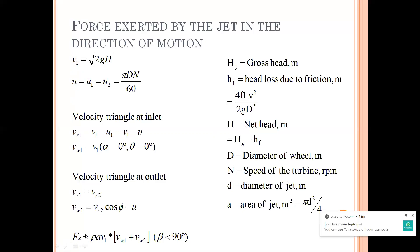So my Fx along the direction of motion is rho * A * v1 * (vw1 + vw2), and it is plus because beta is less than 90 degrees. Now my v1 is given by sqrt(2gH), where capital H is your net head. Your Hg is your gross head, Hf is the head loss due to friction — generally given by Darcy's equation 4flv^2 / 2gd — and H is my net head.